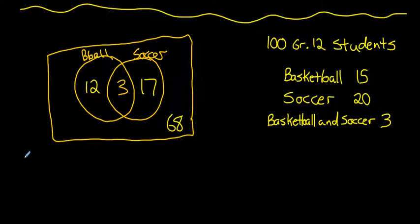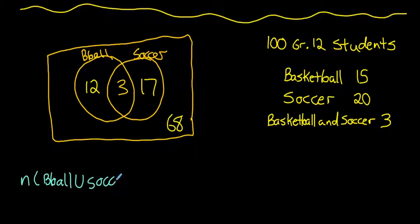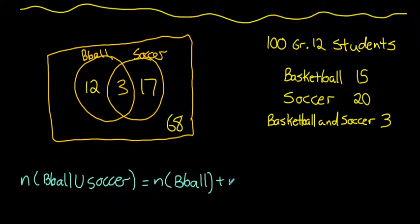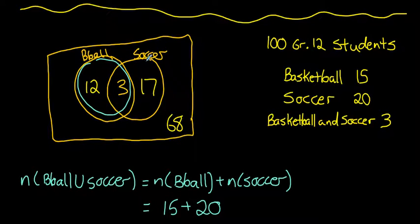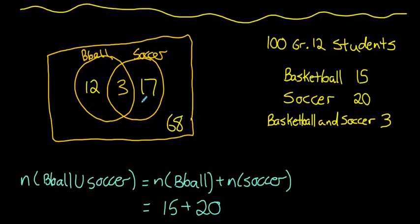Let's use a formula to calculate this. If we simply add the number of basketball players (15) and soccer players (20), we get 35 — but we've established the union is only 32. The difference is that when we added the two teams, the 3 students on both teams got counted twice. Those intersection elements are double counted.